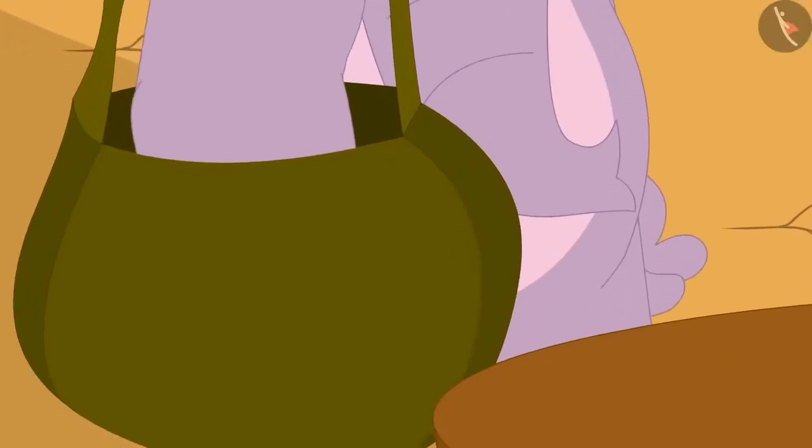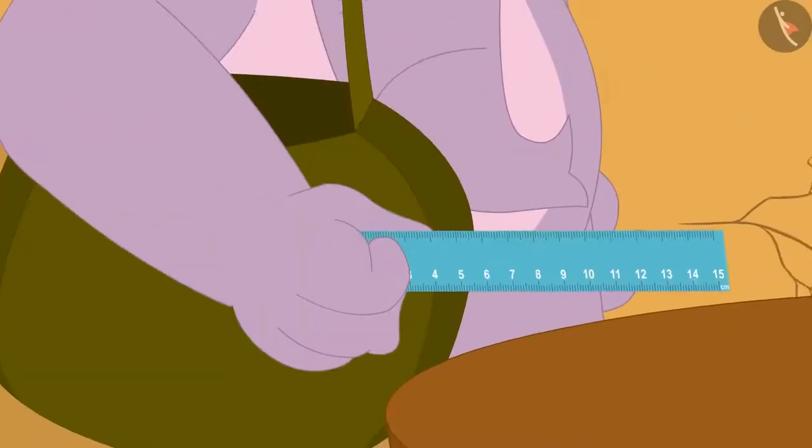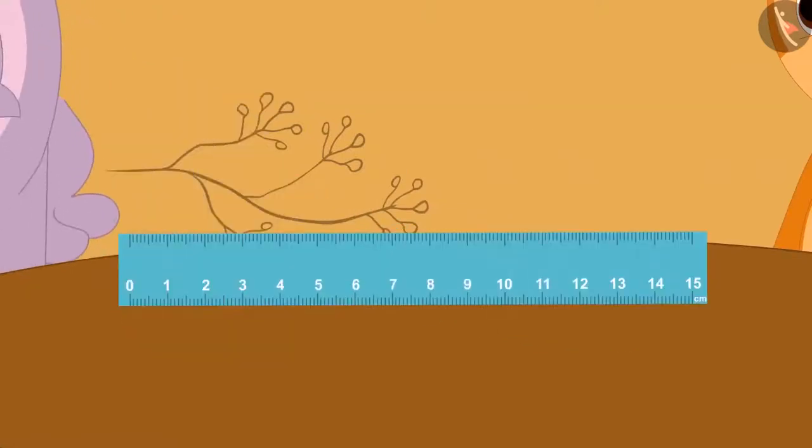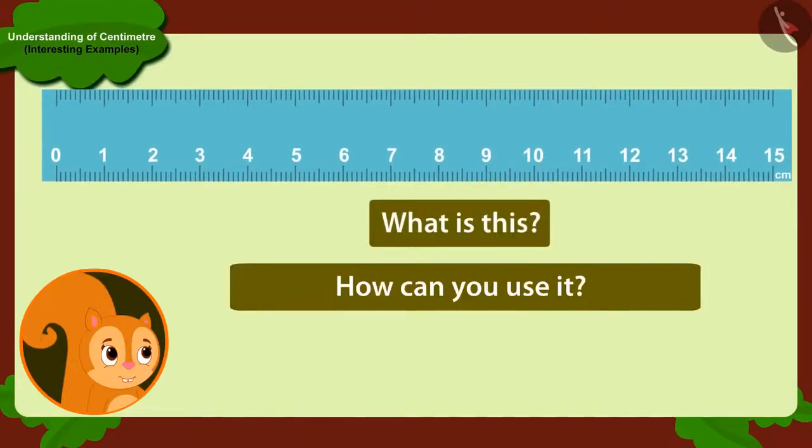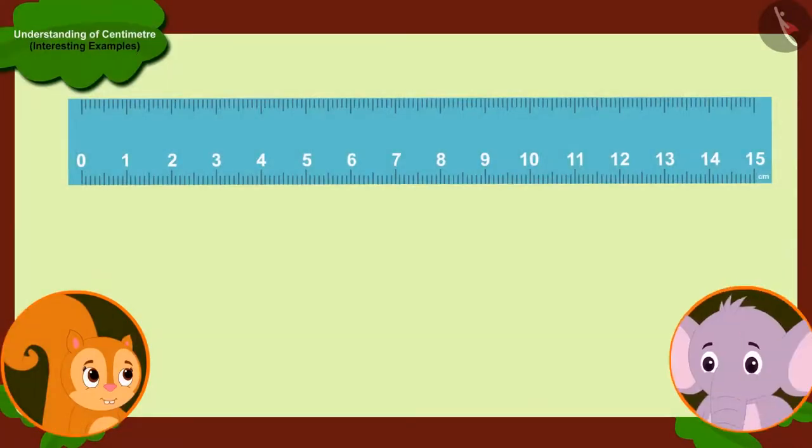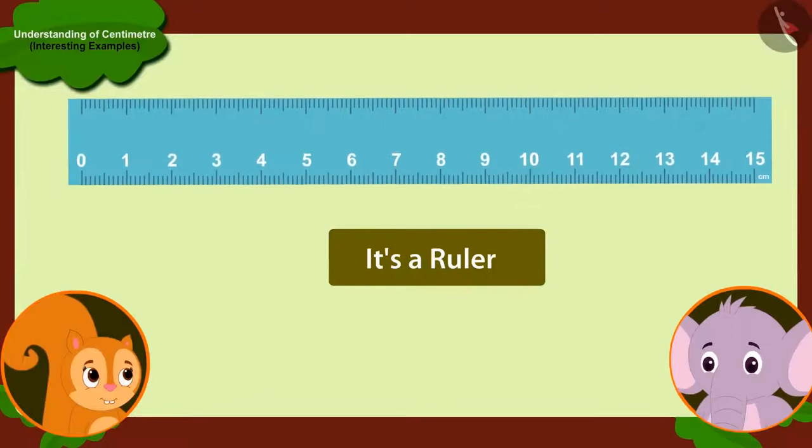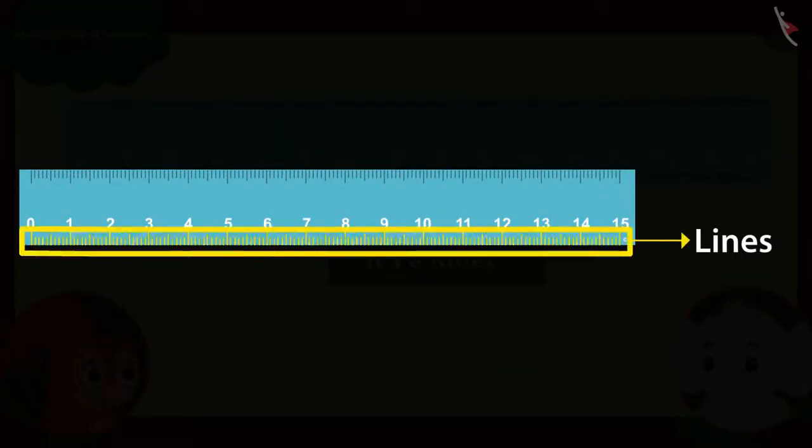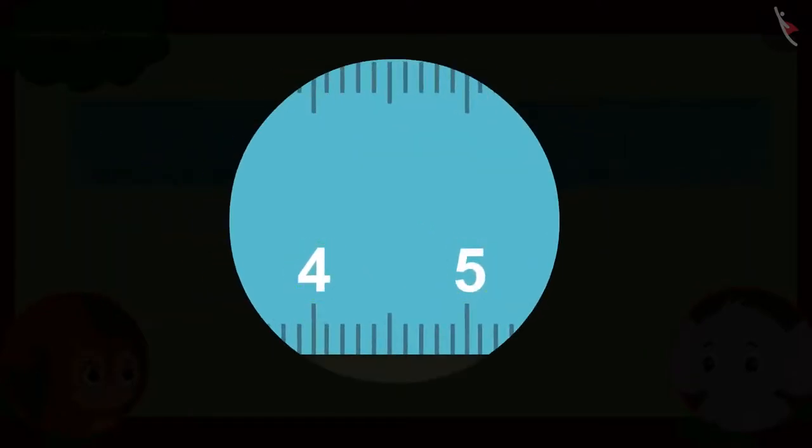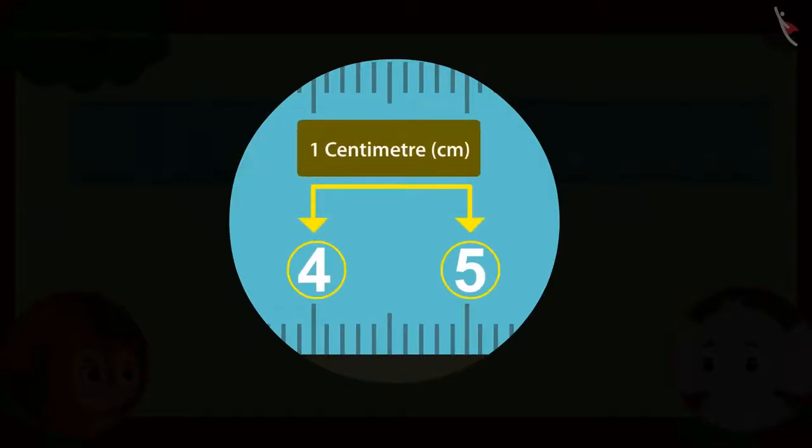Appu took out a plastic strip like this from his bag and placed it on the table in front of Chanda. Chanda asks him, What is this plastic strip? And how can I use it to measure the length of objects in centimetres? Appu starts telling Chanda, This is a ruler. Can you see the numbers written and these lines drawn on it? The difference between any two consecutive numbers written on it is equal to one centimetre.